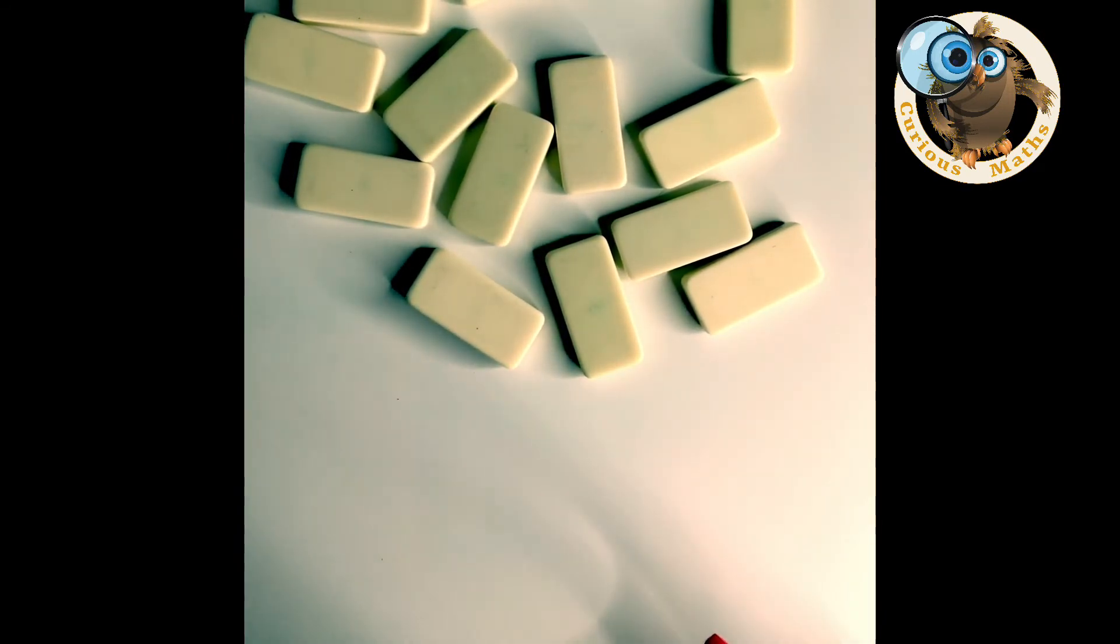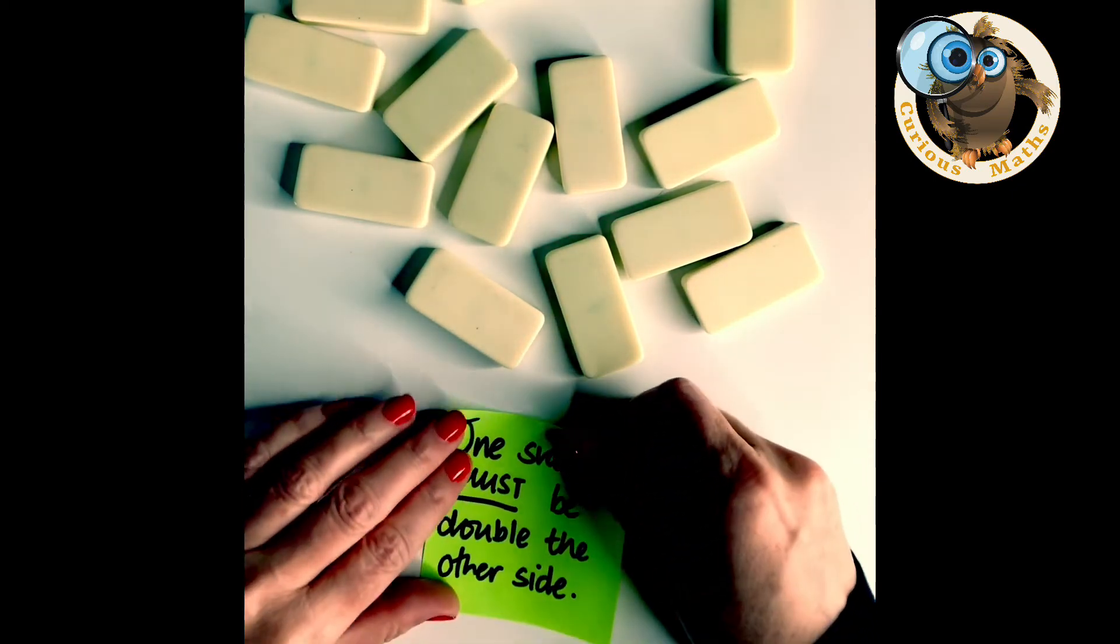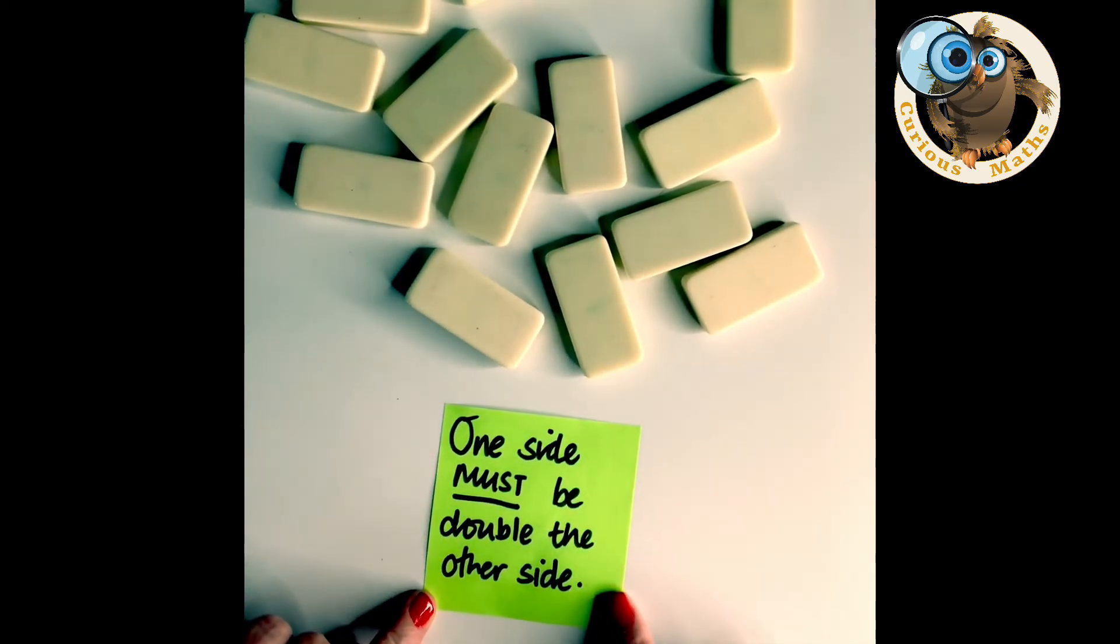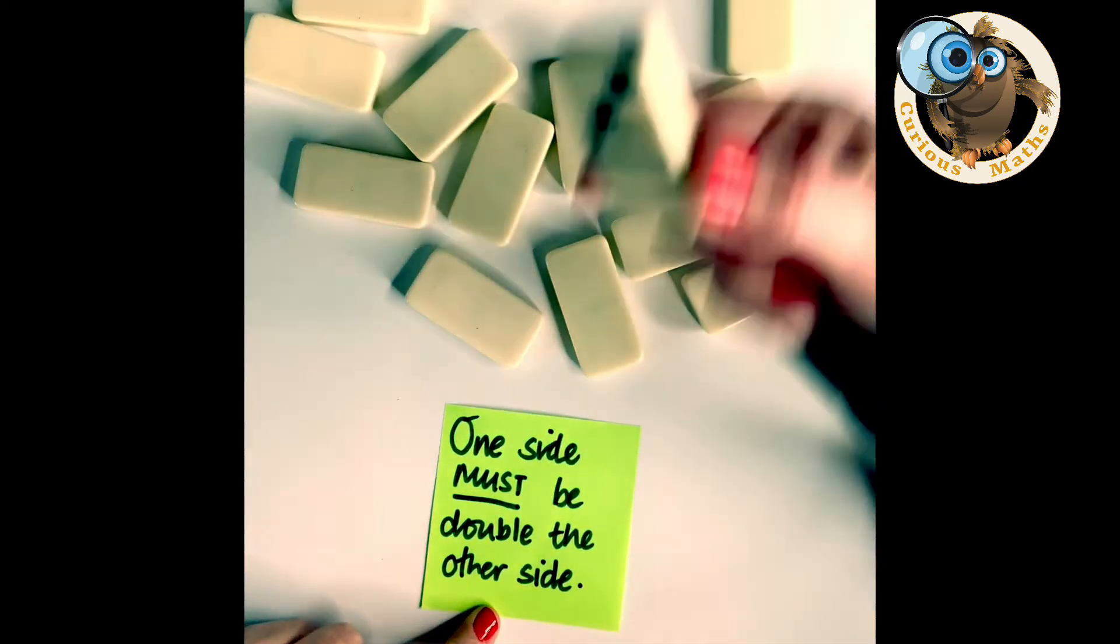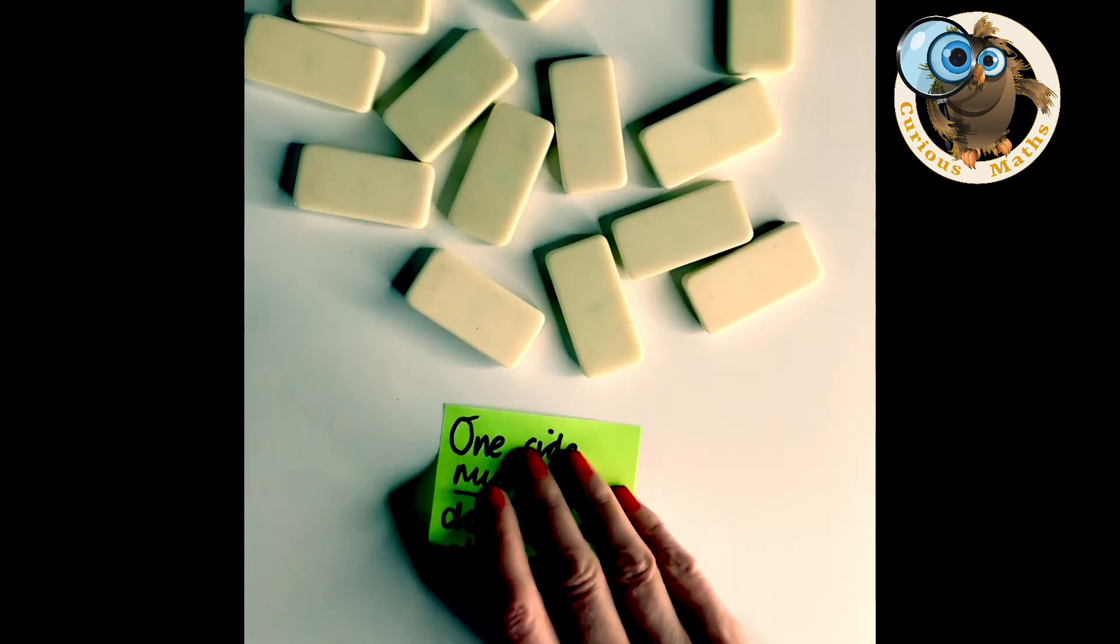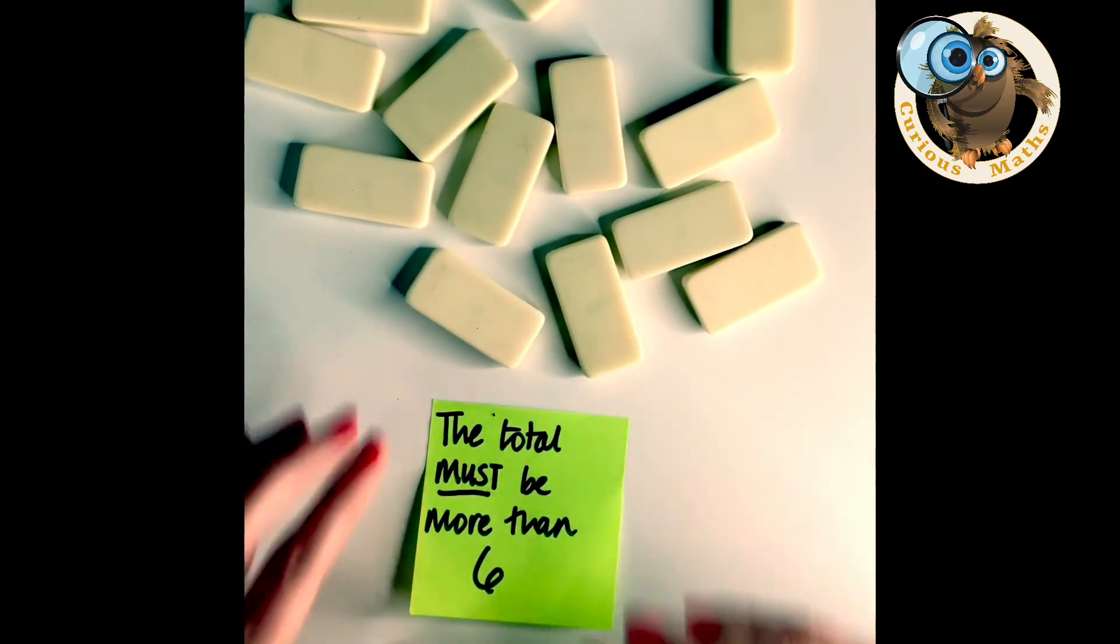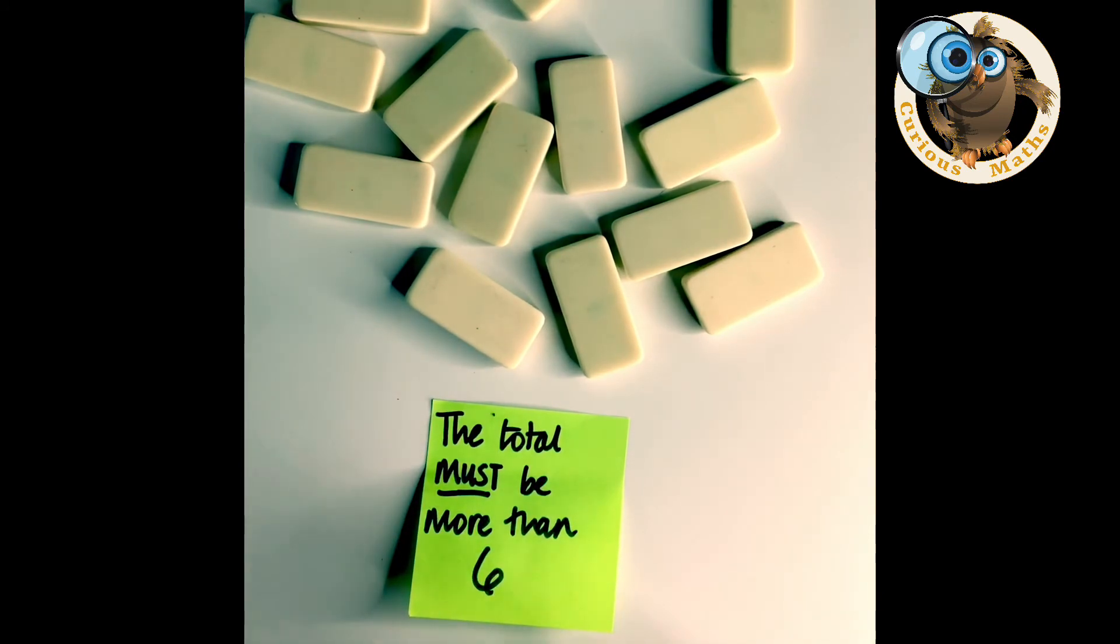Once everyone's had a go, you can generate another rule. One side must be double the other side. Pick a tile, see if it works. And so forth. So every time your domino doesn't match the rule you lose it, every time your domino does you keep it.